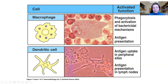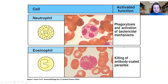Dendritic cells are similar. These are mostly tissue-residing cells that wait to sample pathogens and then take them to the lymph node, which is where the vast majority of antigen presentation occurs.